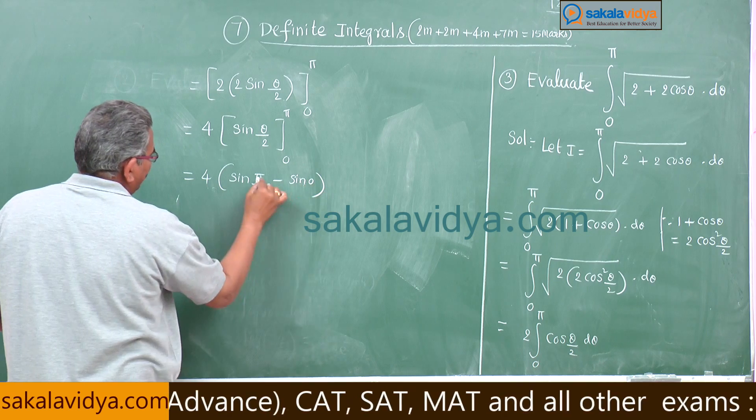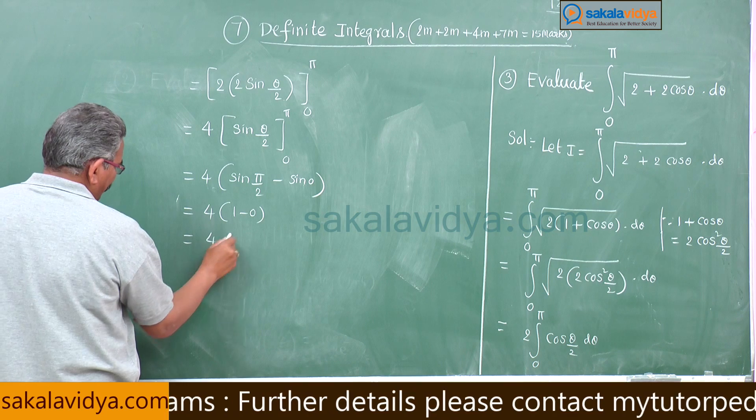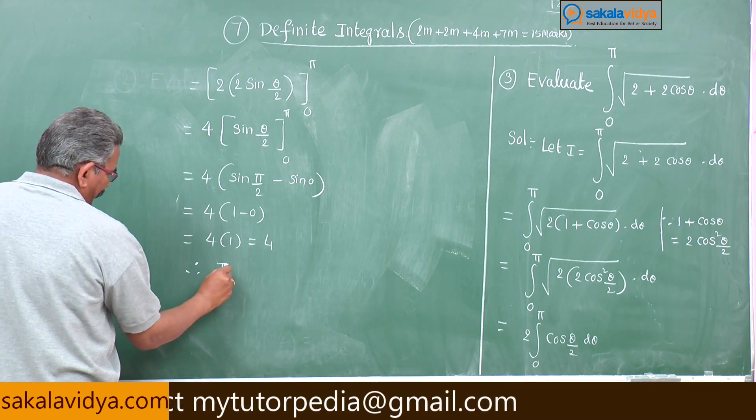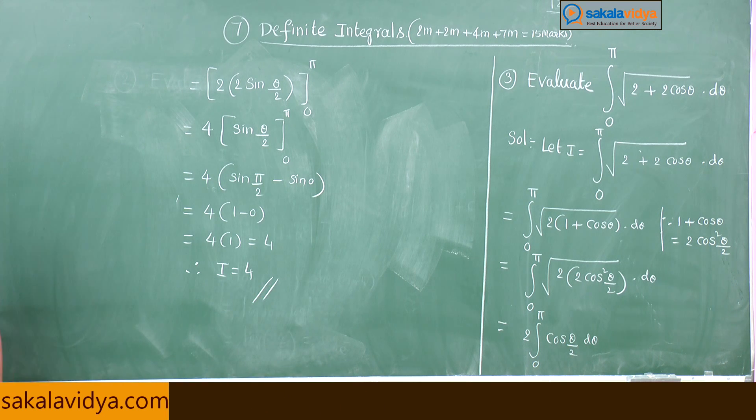Substitute the first upper limit: 4 times sin pi by 2 minus sin 0, sin 90 is 1 minus 0, 4 into 1 is 4. Therefore I is equal to 4. Have you followed? Thank you.